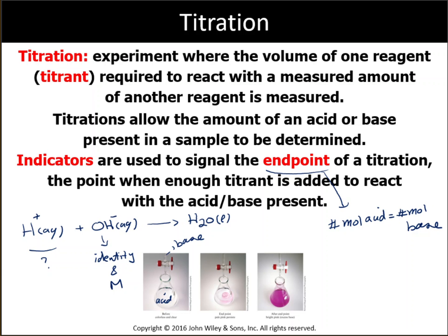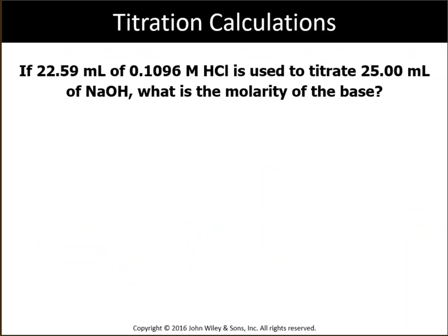Phenolphthalein is not the only indicator that can be used for acid-base reactions. Depending on the pH range, the acid or base being used, or the type of titration, different indicators can be used. Now let's look at examples and see how we can perform calculations to find either the identity of the acid or the molarity of the unknown acid or base in a titration.